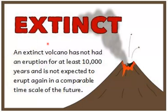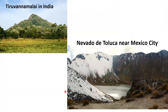An extinct volcano has not had an eruption for at least 10,000 years and is not expected to erupt again in a comparable time scale in the future. Even the Tiruvannamalai mountain in Tamil Nadu, India is an example of an extinct volcano. This picture shows a crater filled up with water, near Mexico City.